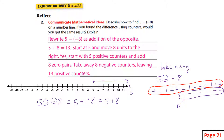So to describe it: you rewrite five minus negative eight as adding the opposite, start at five, and move eight units to the right. If you found the difference using counters, you get the same result — yes. Start with five positive counters, add eight zero pairs, take away eight negative counters, leaving 13 positive counters.